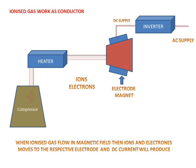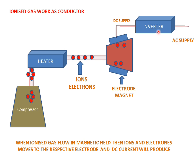Now we will see the animation. The gas in the compressor is compressed and its temperature increases. It then goes into the heater and reaches the ionization stage. These ions and electrons then go to the MHD, moving to their respective electrodes. By the movement of the electrons, DC power supply is generated, which is then converted into AC power supply with the help of an inverter. This is the principle of MHD.